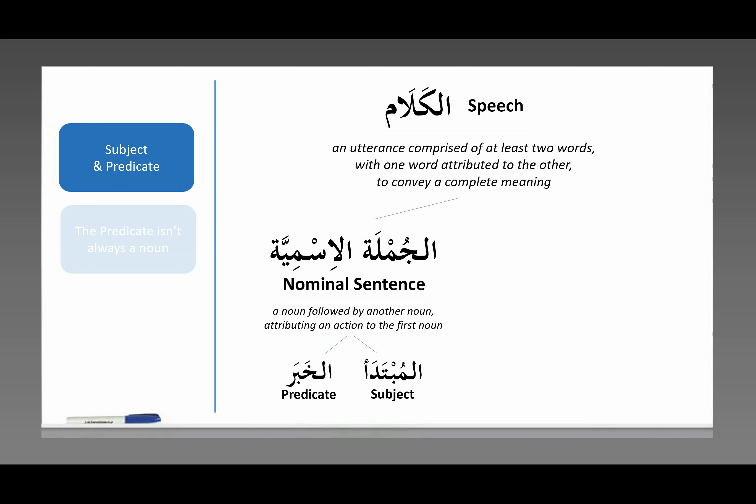So we've been talking about speech — al-kalam. One kind of speech is al-jumlatul ismiyyah, the nominal sentence. We talked about that in the previous lesson. A nominal sentence is a noun followed by another noun, and that second noun attributes an action to the first noun. Every single jumlah ismiyyah is made up of a mubtada, a subject, and a khabar, a predicate.